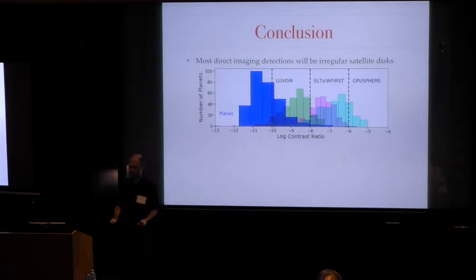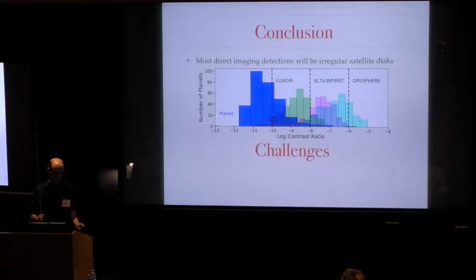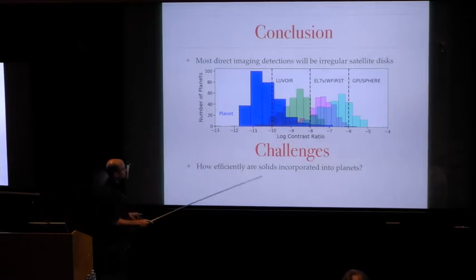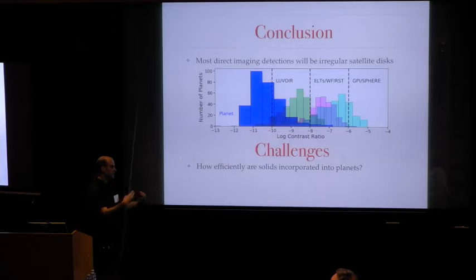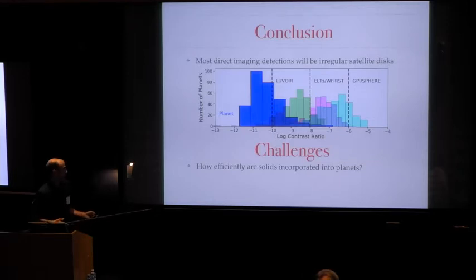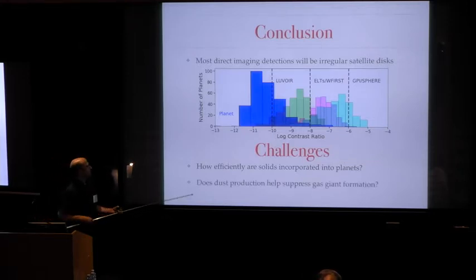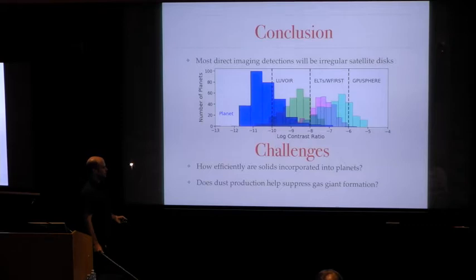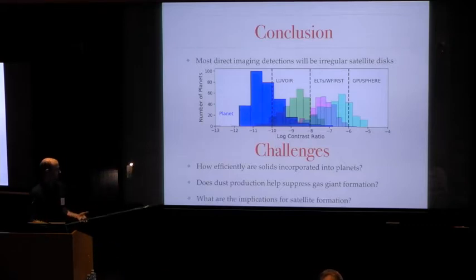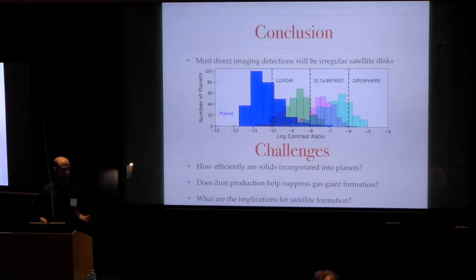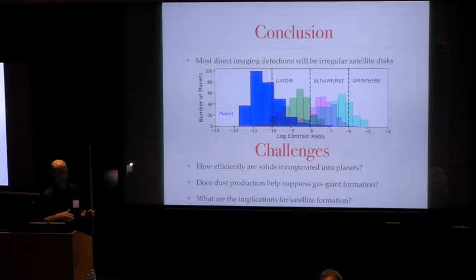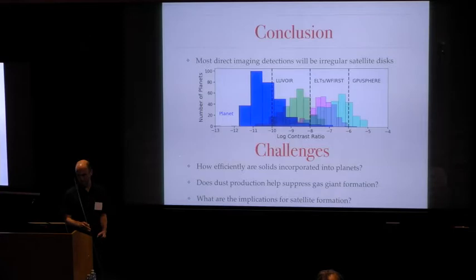The main takeaway from this talk is that even if we investigate a wide range of scales, our clear prediction is that most of the detections from direct imaging going forward are going to be of irregular satellite disks. I think that motivates thinking about these a little bit more carefully. Probably the most important question is how efficient planet formation is and how much can you keep in orbit around the planet as these planets are forming in protoplanetary disks? I've touched on sort of two implications. Would this continual supply of dust help suppress gas giant formation by continually providing opacity to its protoplanet atmospheres? And the other is this could be a very bad day on that first generation of satellites. Maybe you just blow them up and you have to reaccrete them. I would love to talk more about a lot of these things, but I'm happy to take questions.